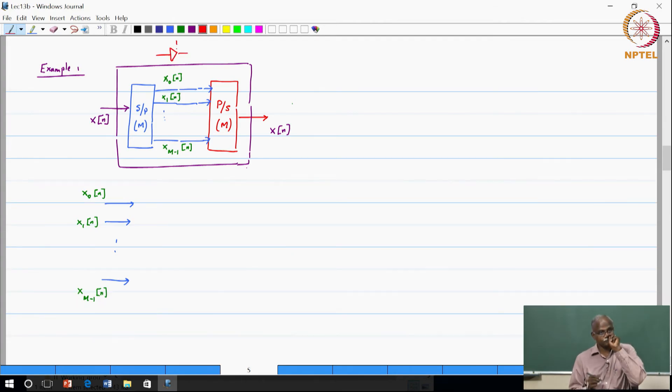So now I have M input streams. I ask you to apply a parallel to serial converter, a parallel to serial converter of dimension M which means that I will produce a single stream coming out. Am I right?